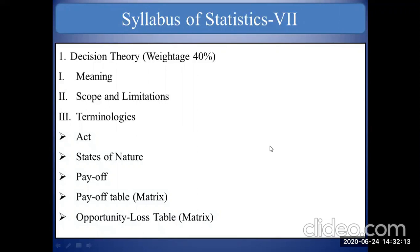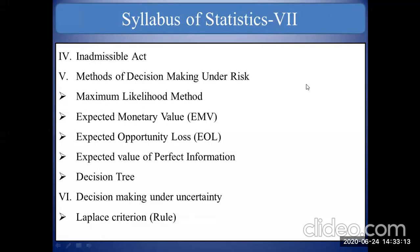Act means the activity about which you have to take a decision. States of nature are things which are not under the control of the decision maker - for example, rain is not under the control of the decision maker, so it is called states of nature, also known as obstacles. Payoff means the outcome of an act and states of nature; it may be in terms of rupees or units. A payoff matrix is the arrangement of payoffs into rows and columns. Then we will also see the opportunity loss table.